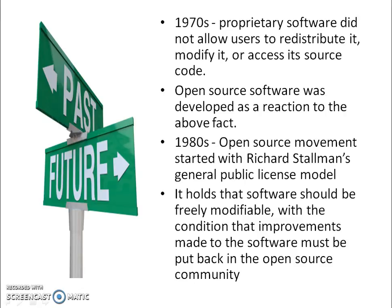Coming to the history of how open source software has evolved: in the early 1970s, proprietary software did not allow users to redistribute it, modify it, or access its source code. Open source software was developed because of this reason. In the 1980s, open source was started by Richard Stallman, who developed the general public license model. It holds that software should be freely modifiable with the condition that improvements made to the software must be put back into the open source community.